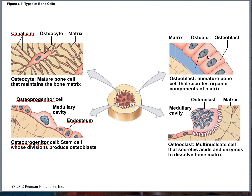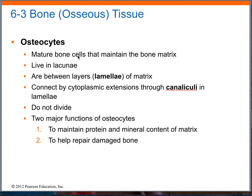What did osteoblasts do? They're immature bone cells and they help to modify and build up bone. What are osteocytes? They're mature bone cells and where are they stuck? In lacunae. Osteoprogenitor cells are your stem cells that are available for conversion to osteoblasts, which can then become osteocytes.